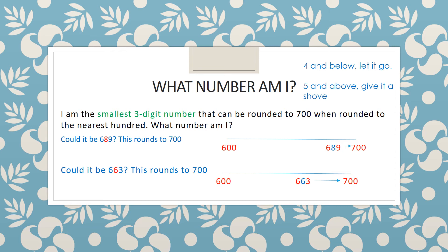Five and above you give it a shove so it's rounded up to 700. 689 and 663 are less than 728 and 749 but are they the smallest three-digit number that can be rounded to 700?